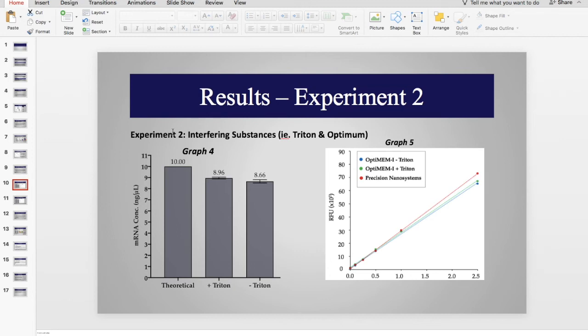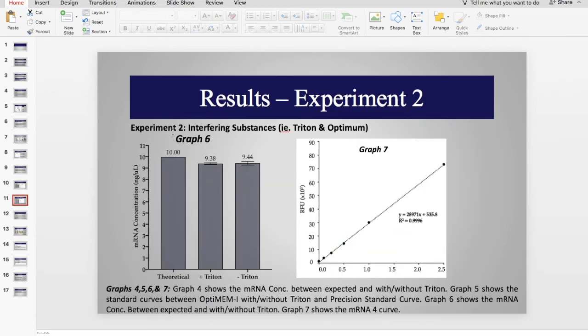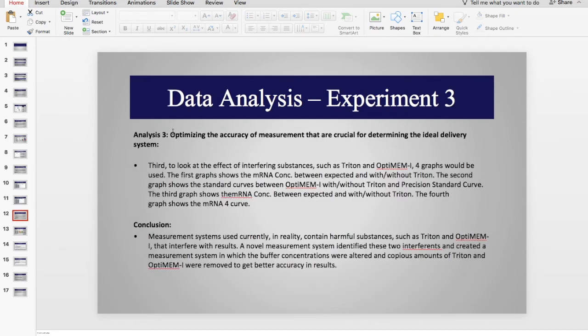When these two substances were removed, the encapsulation efficiency significantly increased by around 25%. And as you can see in these diagrams, the Trident and Optimum significantly lowered the encapsulation efficiency. Hence, we saw that without Trident and Optimum, the measurement system's accuracy could be improved and also encapsulation efficiency of the vectors were also improved.